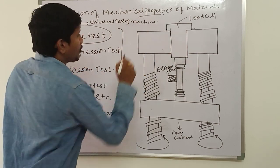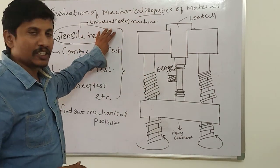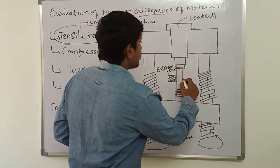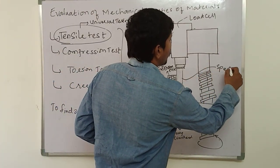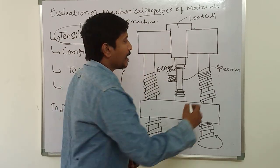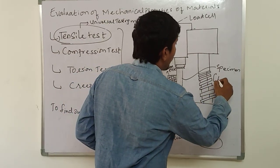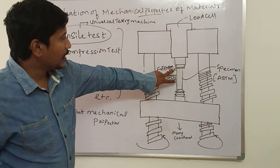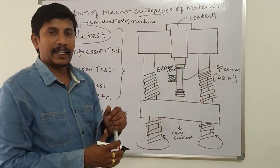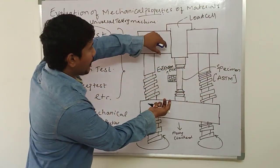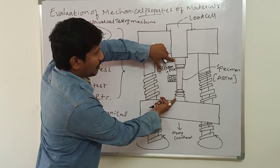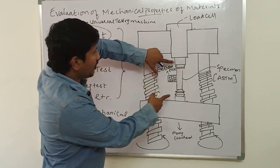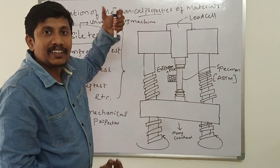This universal testing machine consists of a standard specimen prepared as per the ASTM standards. The specimen is gripped between the two heads of the testing machine and the load is applied.